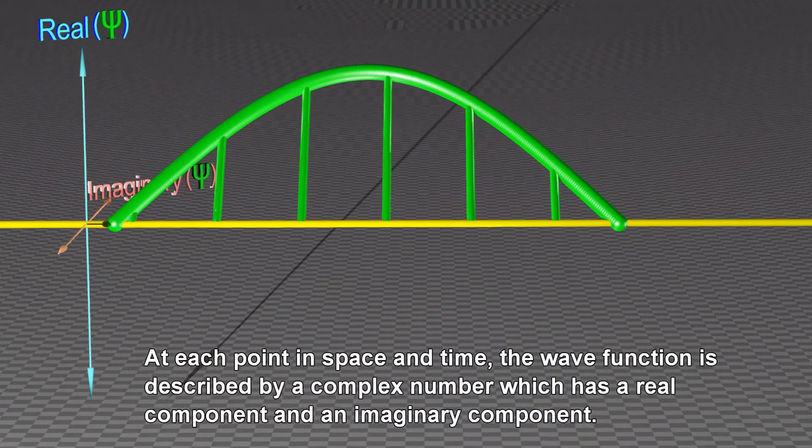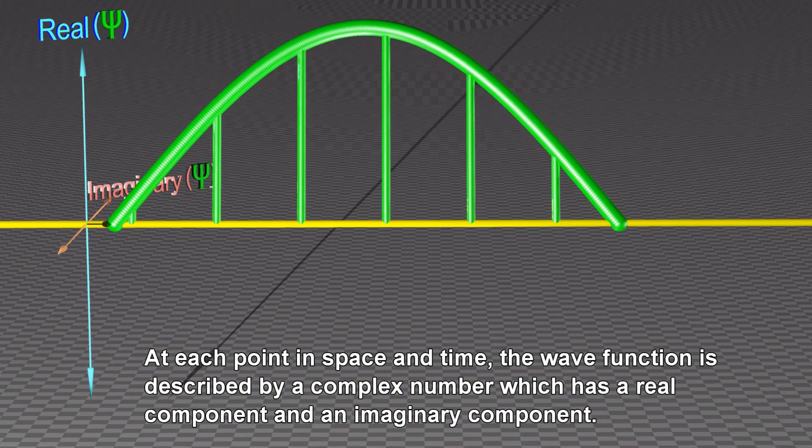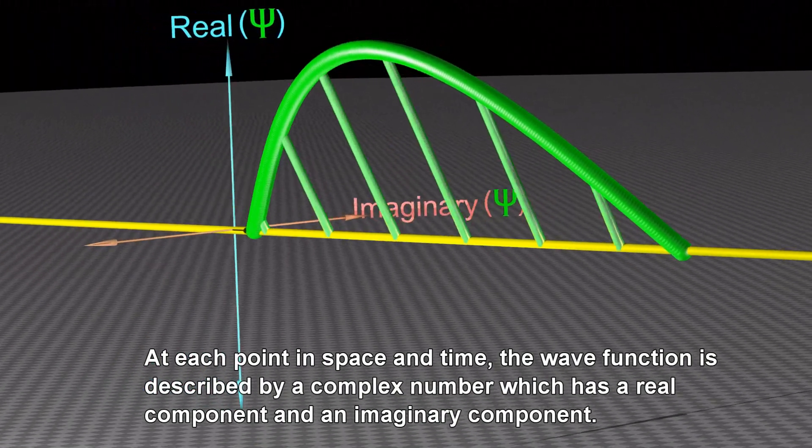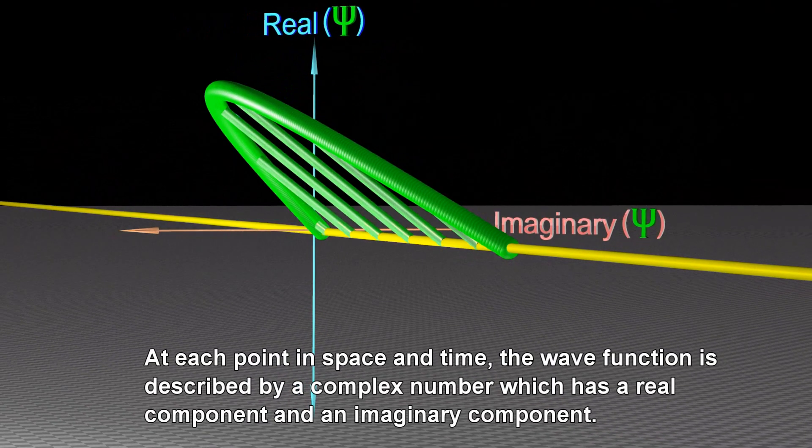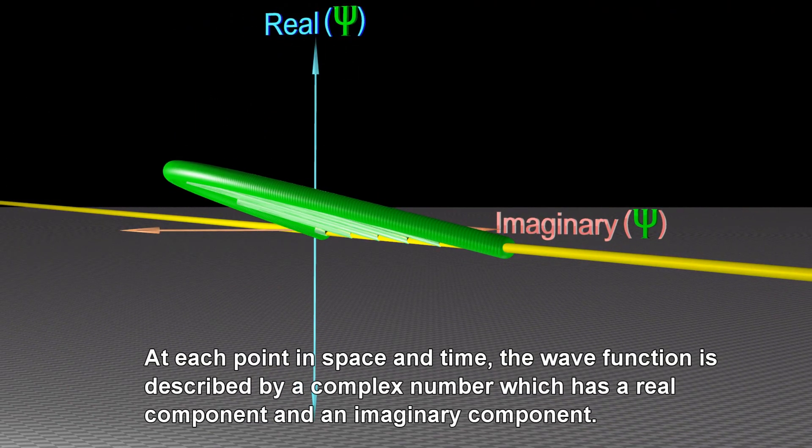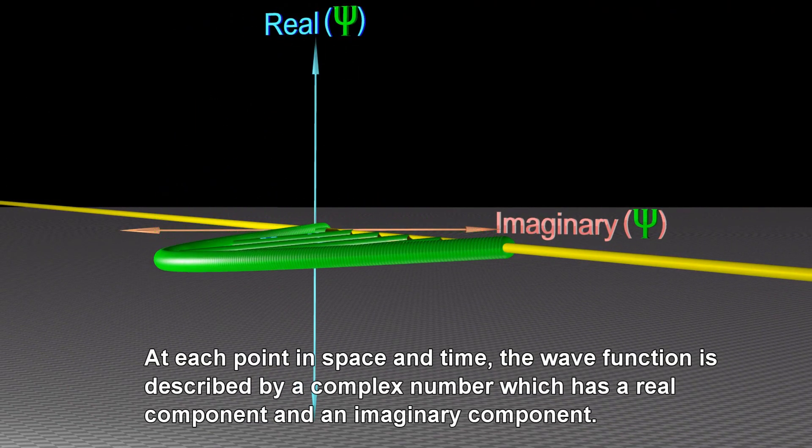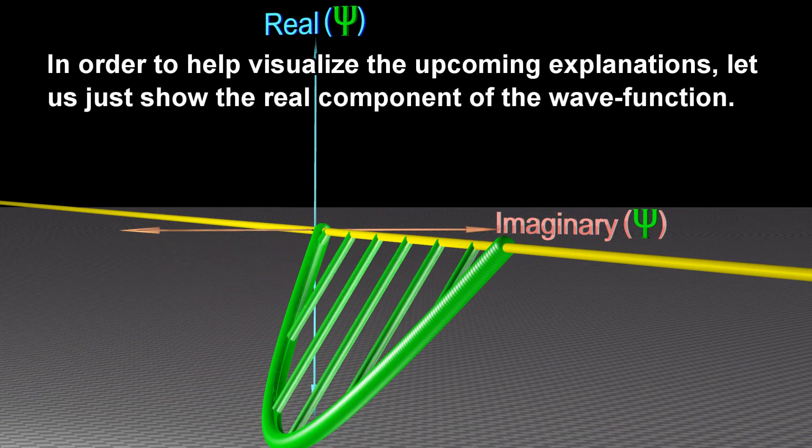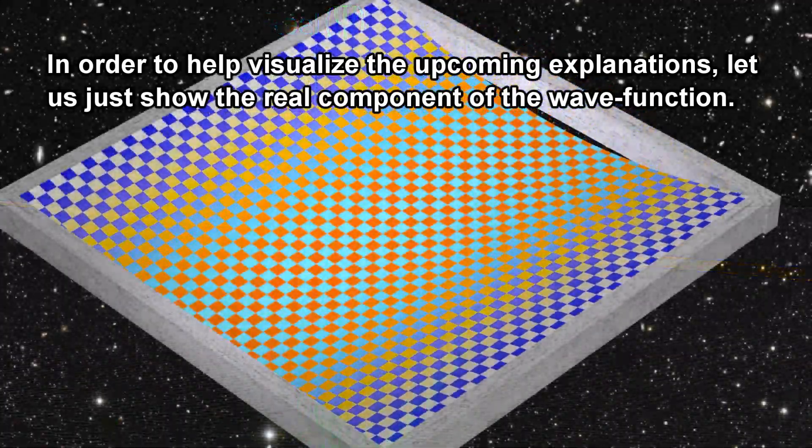At each point in space and time, the wave function is described by a complex number which has a real component and an imaginary component. In order to help visualize the upcoming explanations, let us just show the real component of the wave function.